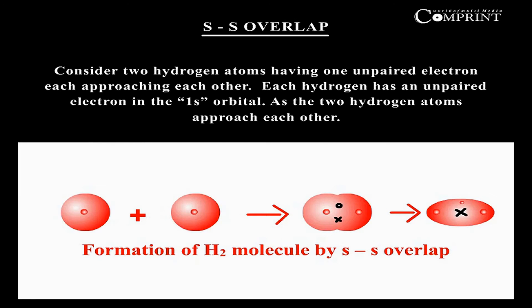S-S overlap. Consider two hydrogen atoms, each having one unpaired electron, approaching each other. Each hydrogen has an unpaired electron in the 1s orbital. As the two hydrogen atoms approach each other,